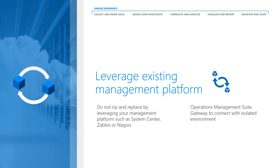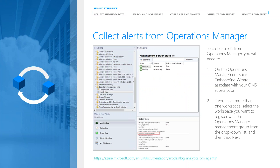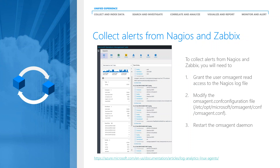For leveraging existing management platforms like Operations Manager, you just open the OMS onboarding wizard, associate with your OMS subscription, select which workspace if you have more than one, apply it to the systems you want connected, and you're done. For Nagios and Zabbix, you grant some user rights to access log files and modify some configurations, and that information can be forwarded directly into OMS in one centralized location.